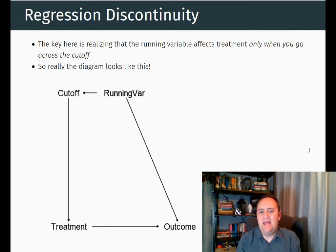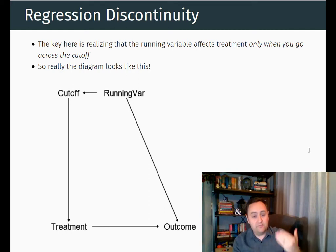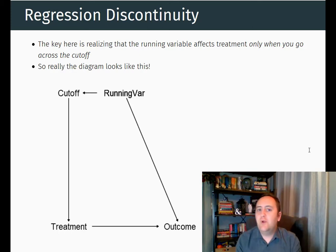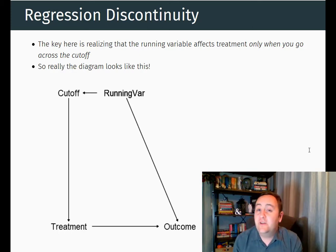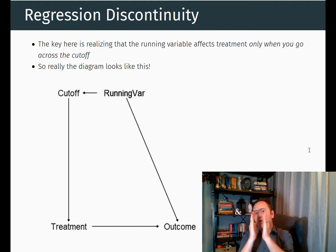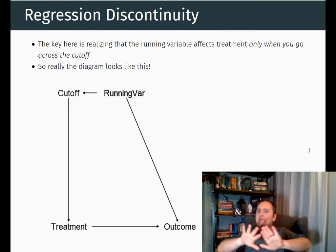So what this means is that we can close the back door. We have a back door here from treatment to cutoff to running variable to outcome, and we can close that back door by controlling for the running variable. But the key is this: we control for running variable everywhere except for the cutoff. We allow some variation in the running variable right at that cutoff. And the idea is that by focusing all of our variation right on that cutoff, we're effectively controlling for running variable — so we're closing the back door.